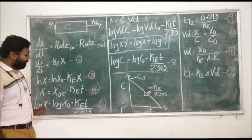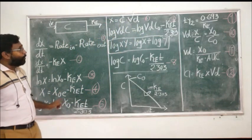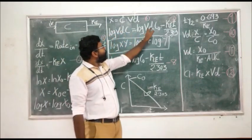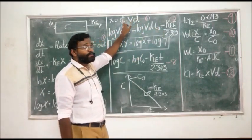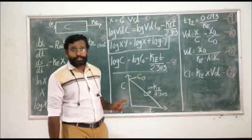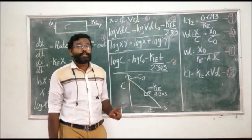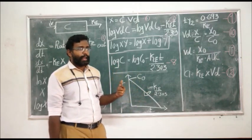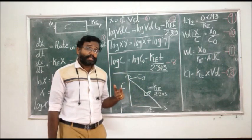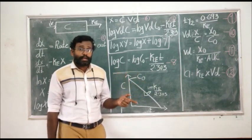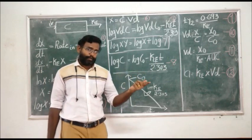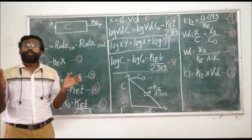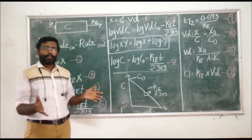Simplifying the equation log(C·Vd) = log(C0·Vd) - (Ke·t)/2.303: since log(Vd) appears on both sides, it cancels out, and you get: log C = log C0 - (Ke·t)/2.303. Here, the subscript zero indicates the initial time. C0 is the initial concentration at time zero, and C is the concentration at any later time t.